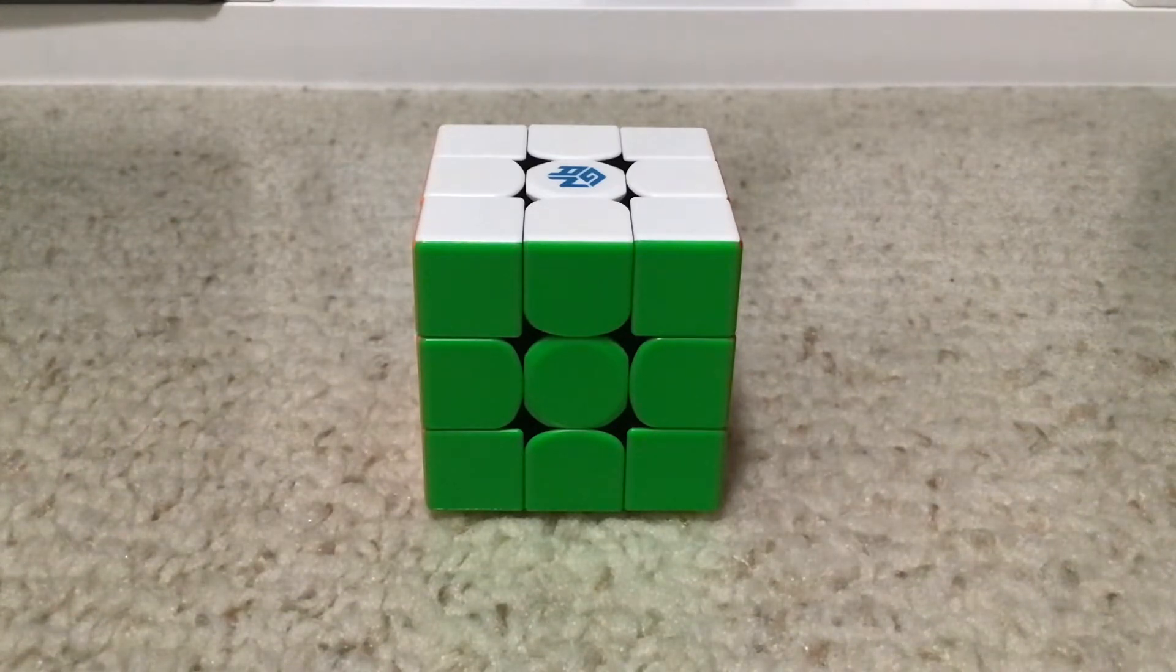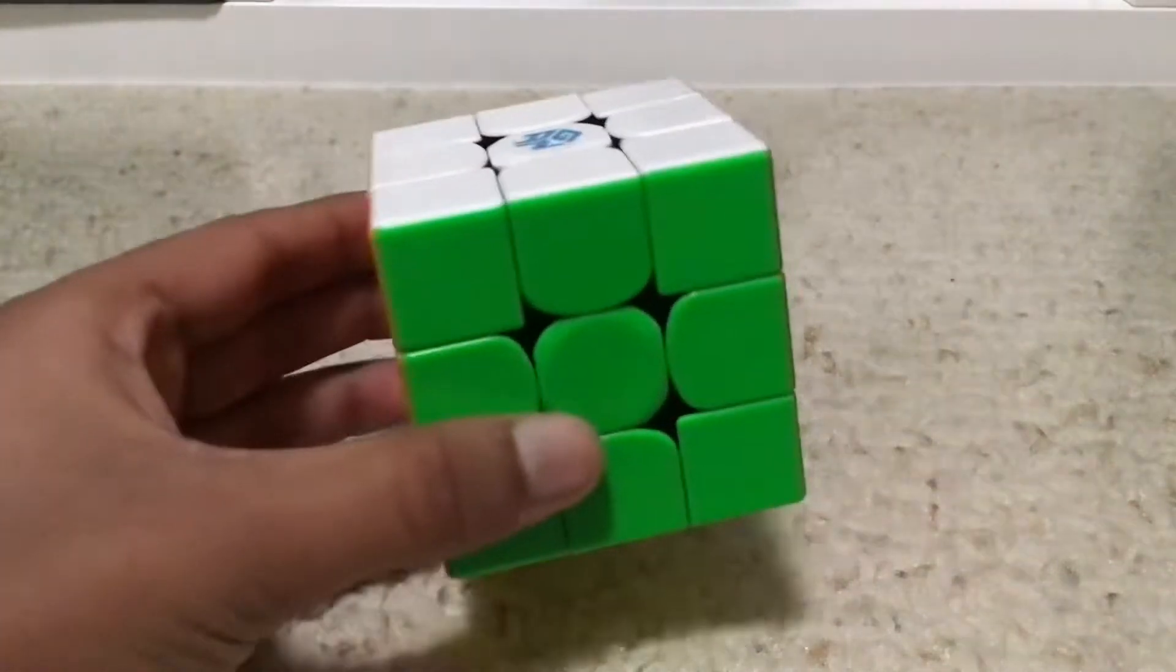I average 17 seconds using the GAN356M, and I'm also putting the algorithm notation in the description box below. So without further ado, let's get started with the T-perm.